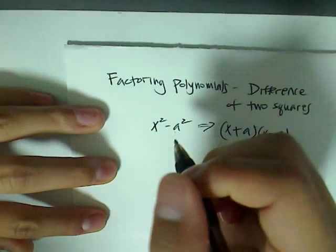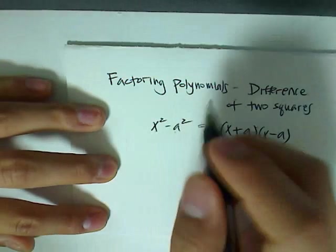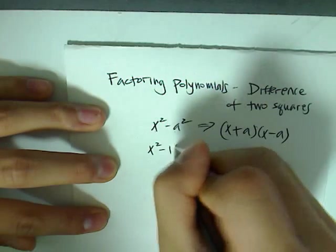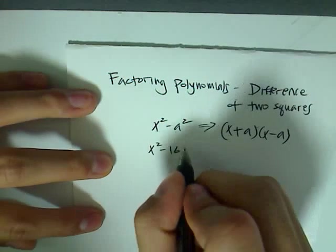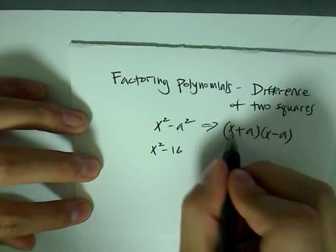So to give an example of how you would factor a difference of two squares, we will use the polynomial x squared minus 16. So to factor this completely, we need to find x and a.